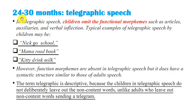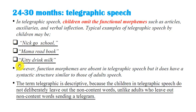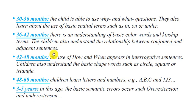The next stage in the acquisition of semantics occurs at about 24 to 30 months — telegraphic speech. In telegraphic speech, children omit functional morphemes such as articles, auxiliaries, and verbal inflections. Typical examples may be 'neck go school,' 'mama read book,' 'kitty drink milk.' Functional morphemes are absent, but it does not have a syntactic structure similar to adult speech. The term 'telegraphic' is descriptive — children do not deliberately leave out non-content words, unlike adults sending a telegram.